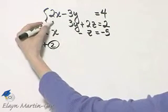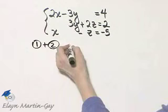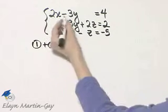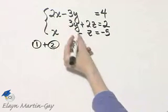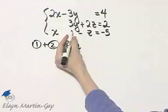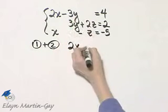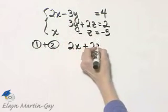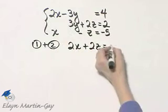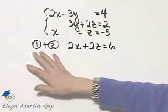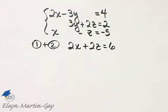And watch what happens. Two x plus basically zero is two x. Negative three y plus three y, that term subtracts out and then plus two z is equal to four plus two or six. So that's equation one plus equation two.